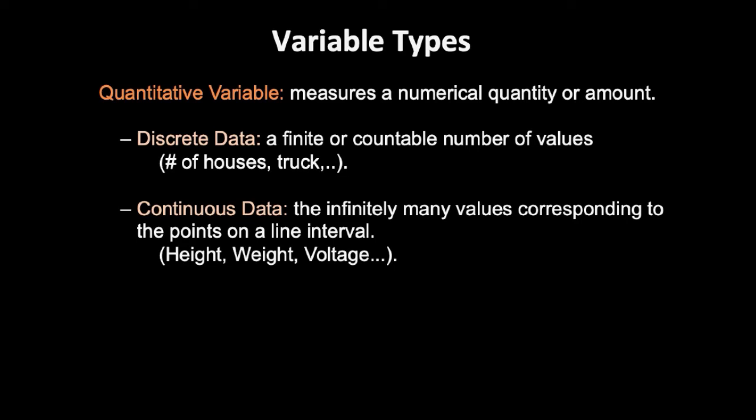Continuous data has infinitely many values corresponding to points on a line interval. Examples include height, weight, and voltage. For weight, you can say 160 or 160.5 — it is not always whole numbers. Height might be 4.3 or 6.1 — you see, we use decimals. That type of variable is called a continuous variable.